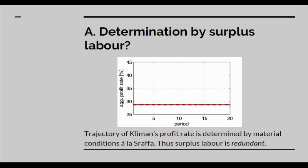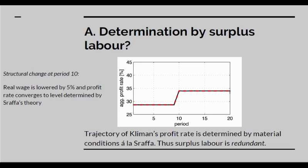Now suppose that at time period 10 we reduce the real wage by 5%. Immediately, in both Kliman's and Sraffa's model, the rate of profit goes up, and it goes up by the same amount in both cases. Again, it's determined by material conditions. Kliman does not actually give you a different result from Sraffa. Given the same input data, the Sraffian model and the Kliman model give exactly the same results.